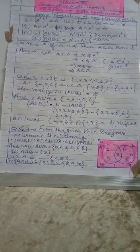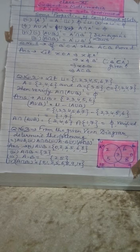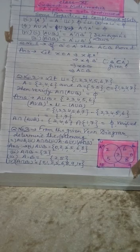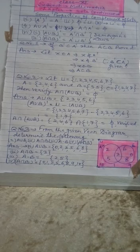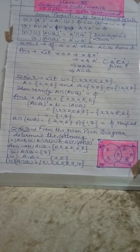And U is 1, 2, 3, 4, 5, 6, 7 set, and A union B is 2, 3, 4, 5, 6 as discussed above. So U minus A union B will be 1, 7.